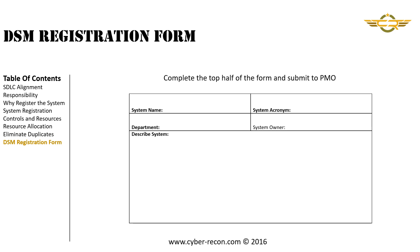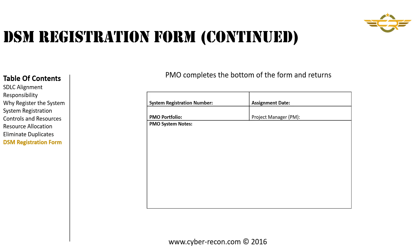An overly simplistic example of a registration form is one presented by the fictitious Department of Social Media. This simple form has two halves. The top half is completed by the system owner, who identifies the system name, system acronym, the department the system will support, the system owner, and a description including the system's categorization. The bottom half is completed by the PMO and returned to the system owner, including a registration number, assignment date, whether the system belongs in a PMO portfolio, an assigned project manager if needed, and any special circumstances from the PMO.